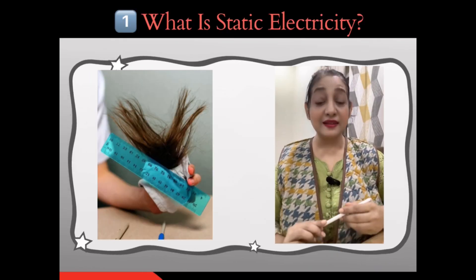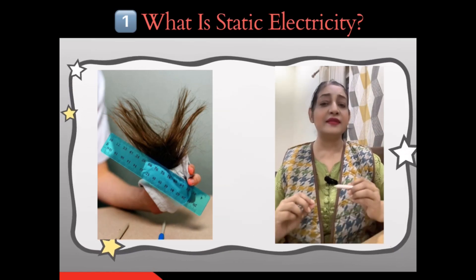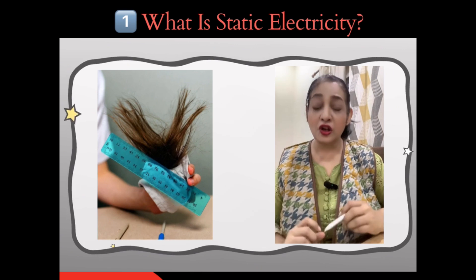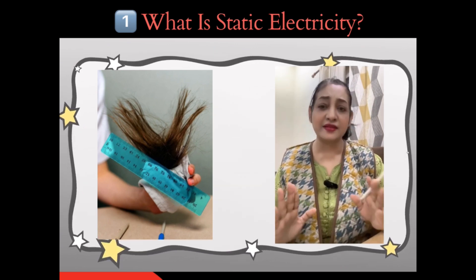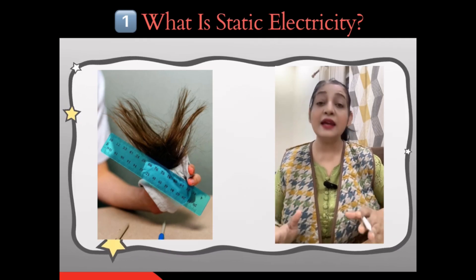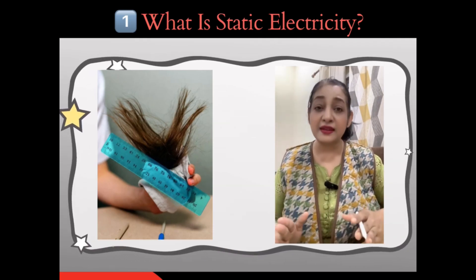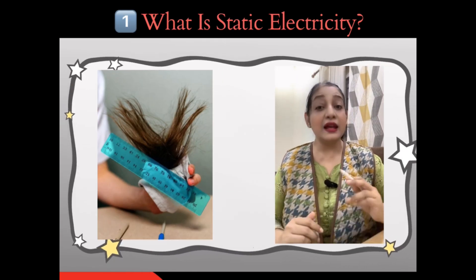What is static electricity? Static electricity is the build-up of electric charge on the surface of an object. Unlike current electricity, these charges do not flow continuously. They stay in one place, hence the word static means still. It is caused by the transfer of electrons when two objects rub together.